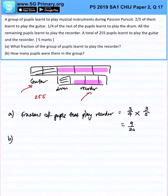Now let's take a look at part B. How many pupils were there in the whole group? Now you realize that the fractions of pupils playing the guitar and the recorder...